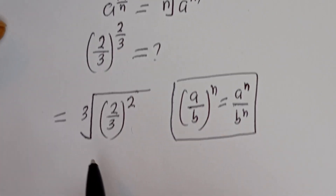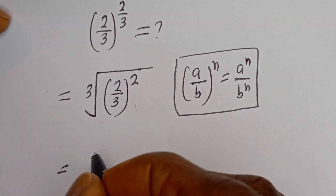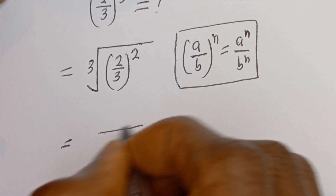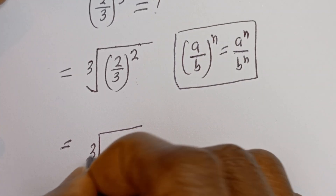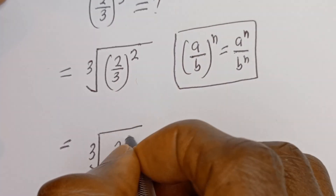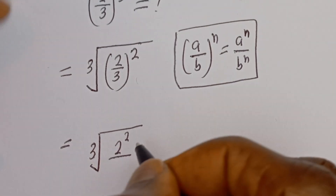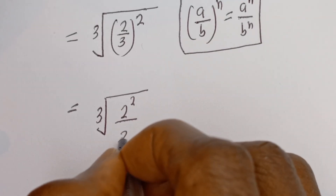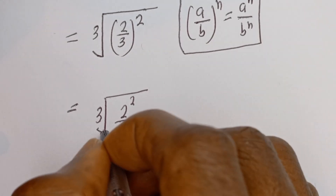Then this can be written as the cube root of 2 to the power of 2, divided by 3 to the power of 2.